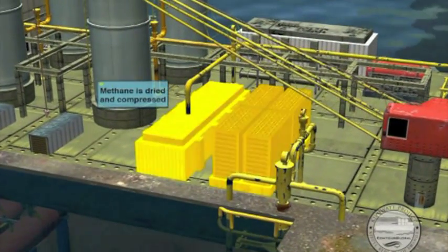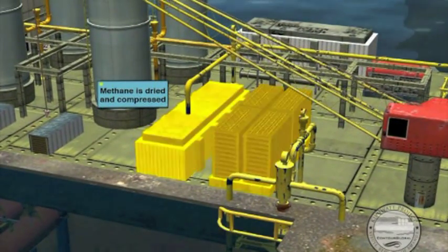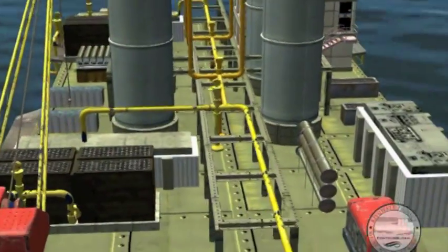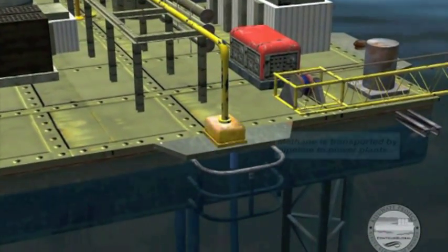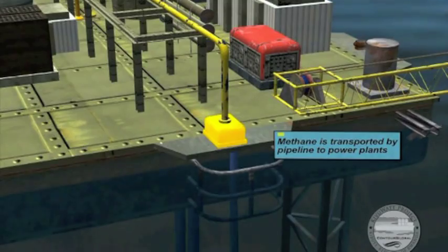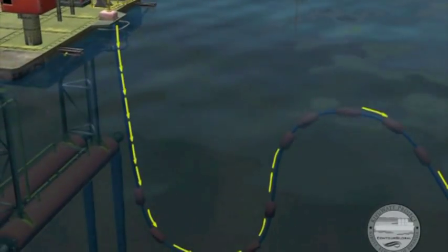Further processing dries and compresses the methane for export to a shore-based power plant. Purified methane is then transported by a submerged pipeline to a power plant for electrical generation.